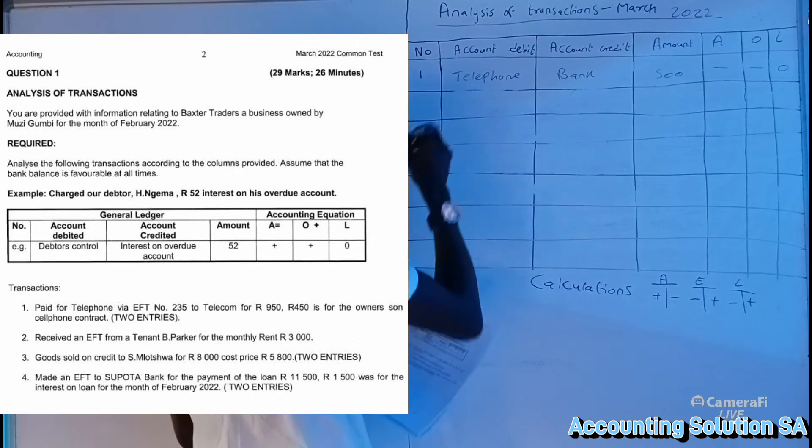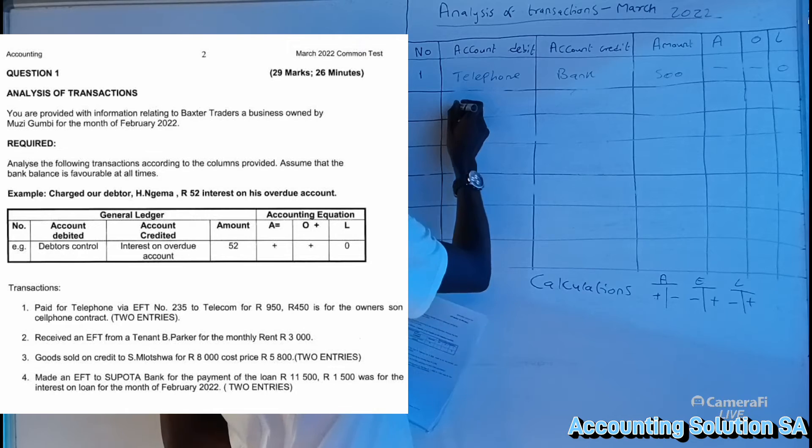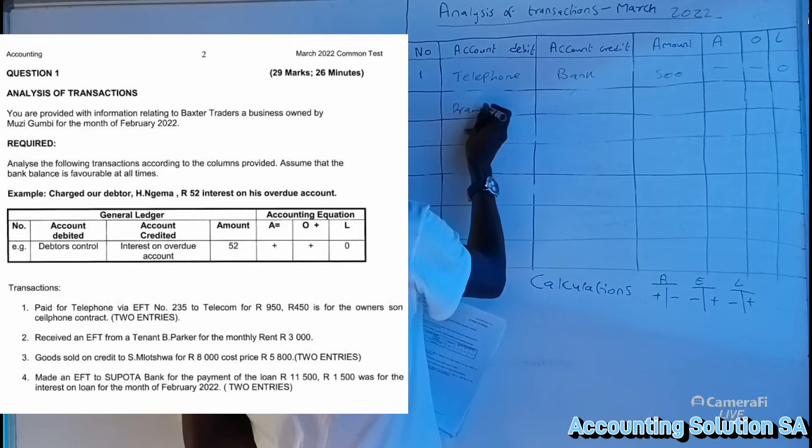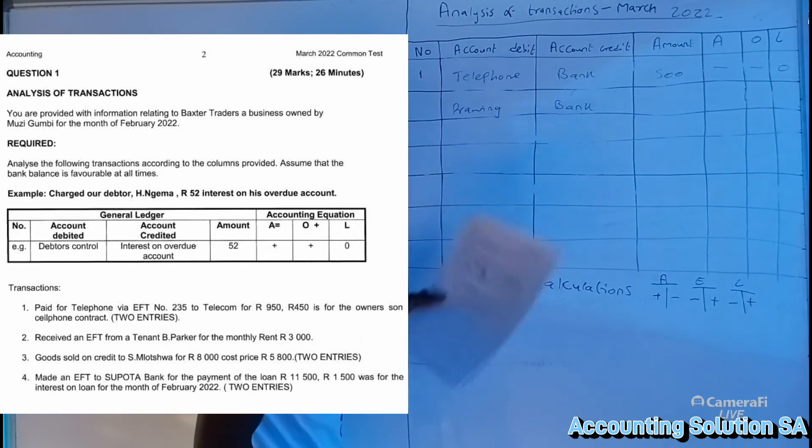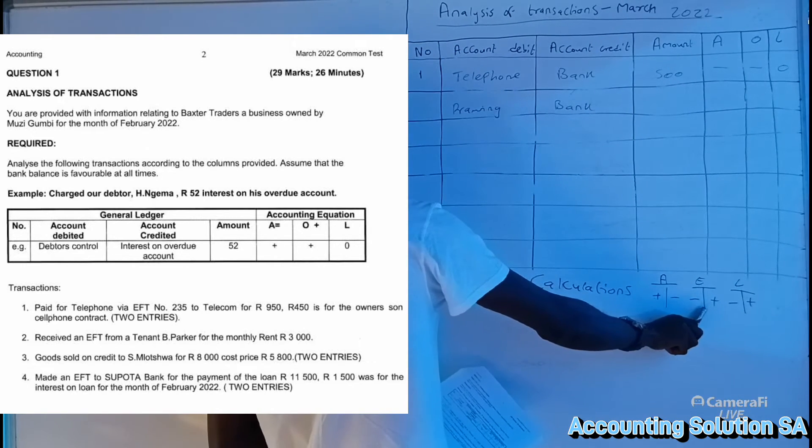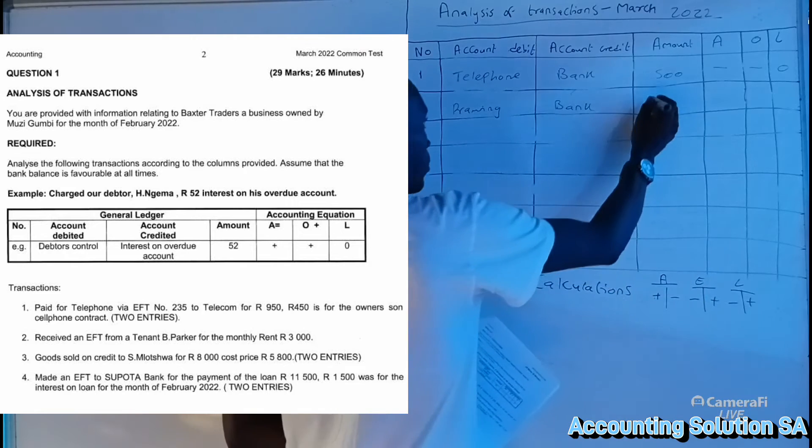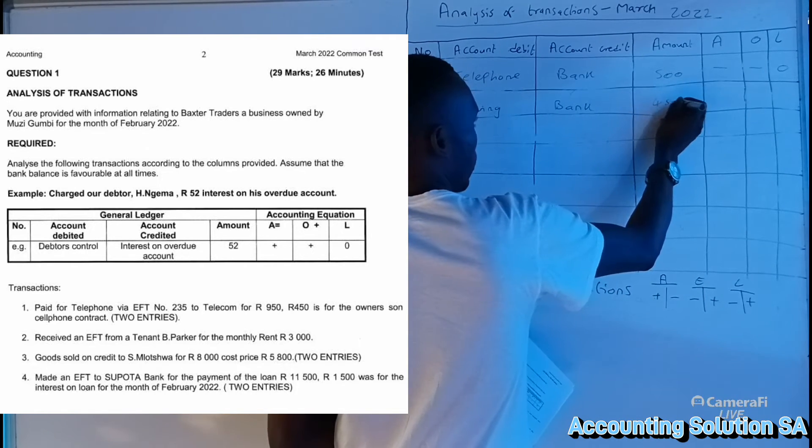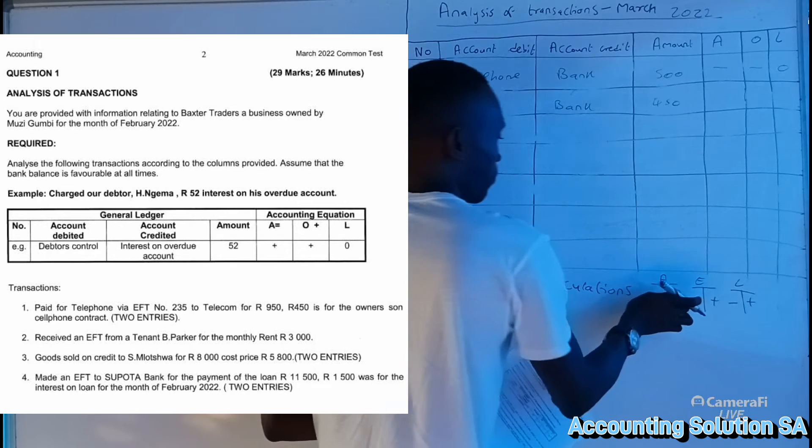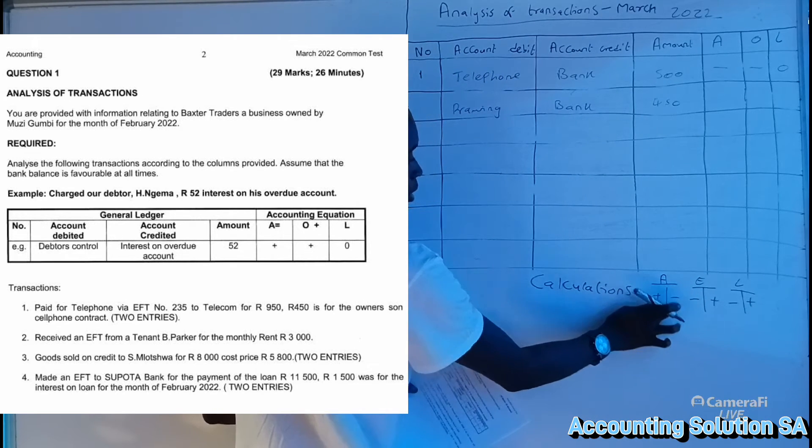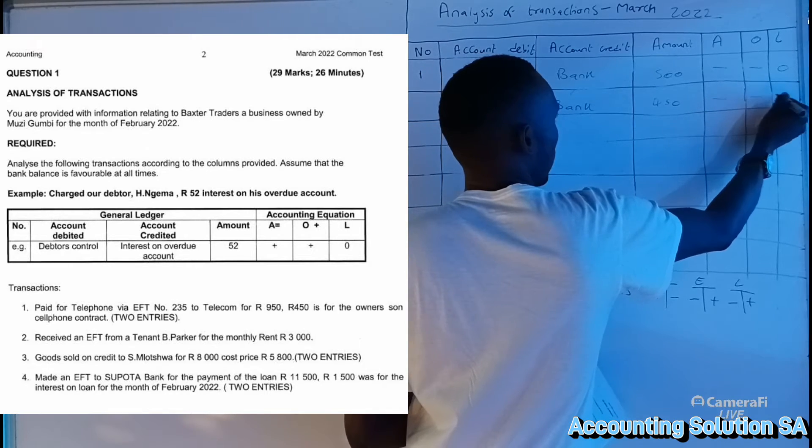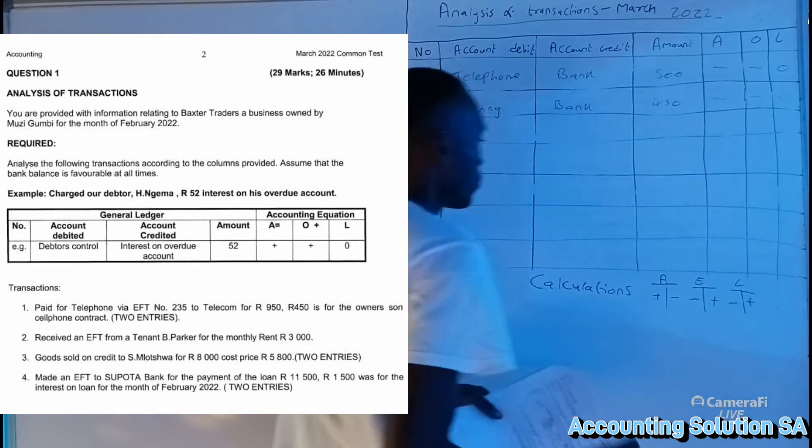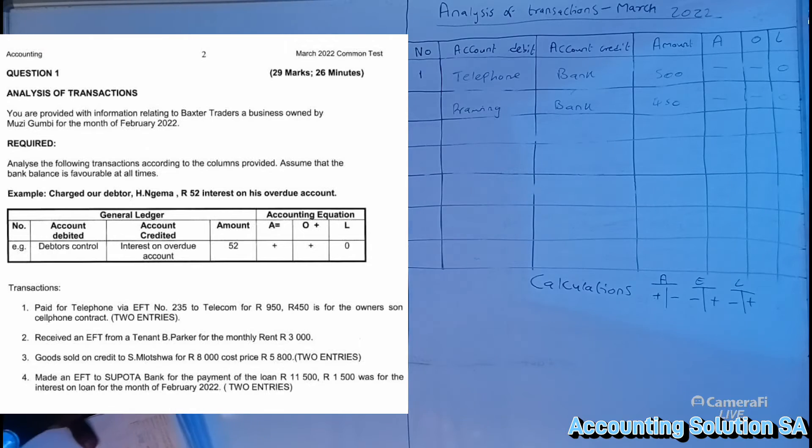Now we have to do the other one of 450, which is drawings and bank. Why drawings on the debit side? Because it's going to reduce equity. It's going to be 450 and bank, because we paid, is getting out of our assets. It's going to be minus minus, then unchanged.